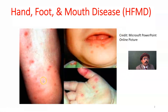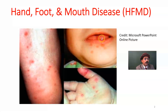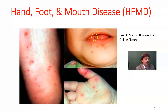Blister and rash formation occurs, and there will be sores in the mouth. The rash or blisters may be present on the tongue, soft palate, uvula, and hard palate. This is a painful situation — children don't like to eat or drink fluids. So there is a risk of dehydration and inadequate nutrition because of sores in the mouth and painful swallowing.